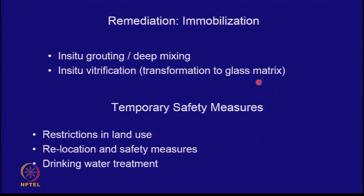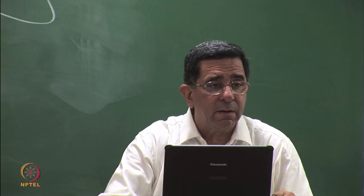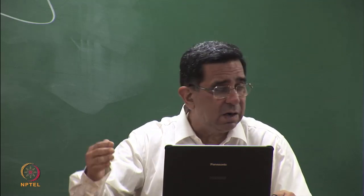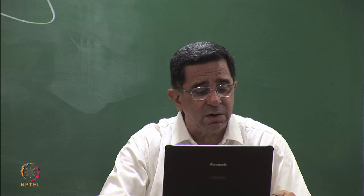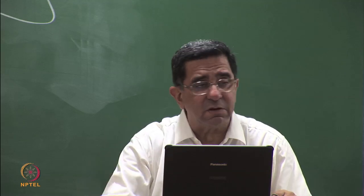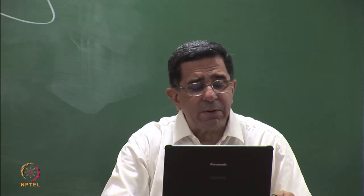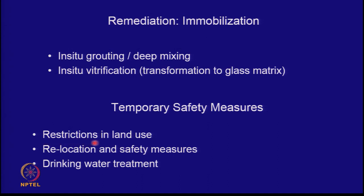These are some remediation techniques for which you will need the appropriate engineer — whether a chemical, thermal, biochemical engineer or chemistry expert. Temporary safety measures while remediation proceeds include restrictions on land use, relocation of people, adopting safety measures, drinking water treatment, and closing all groundwater wells from which the contaminated material is coming out.